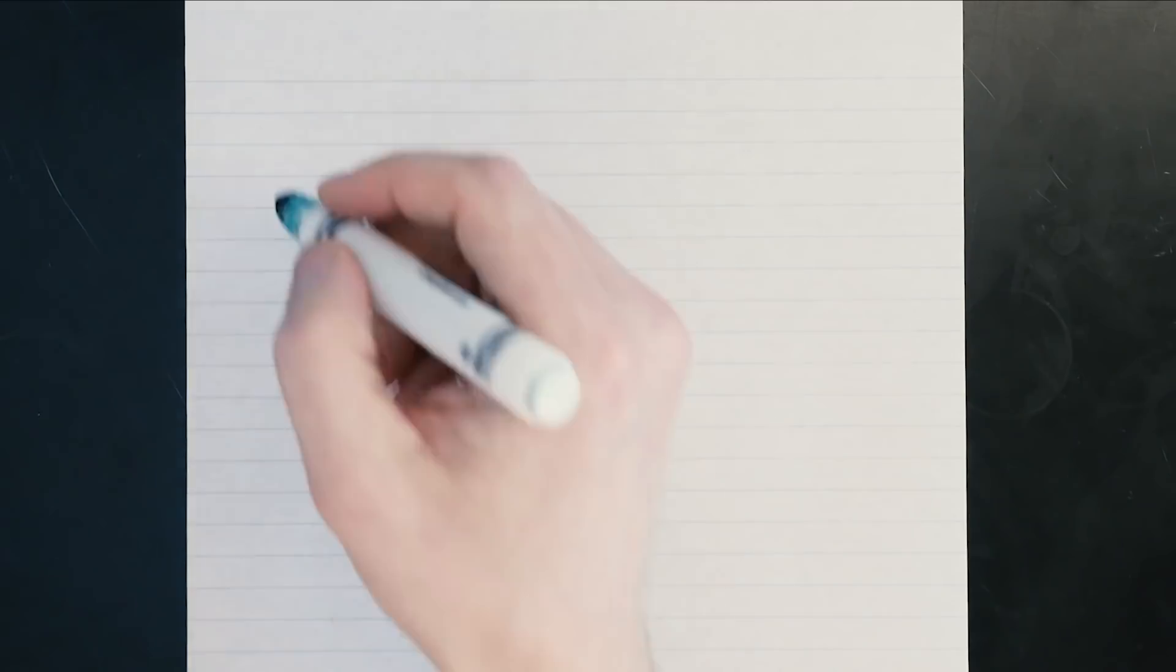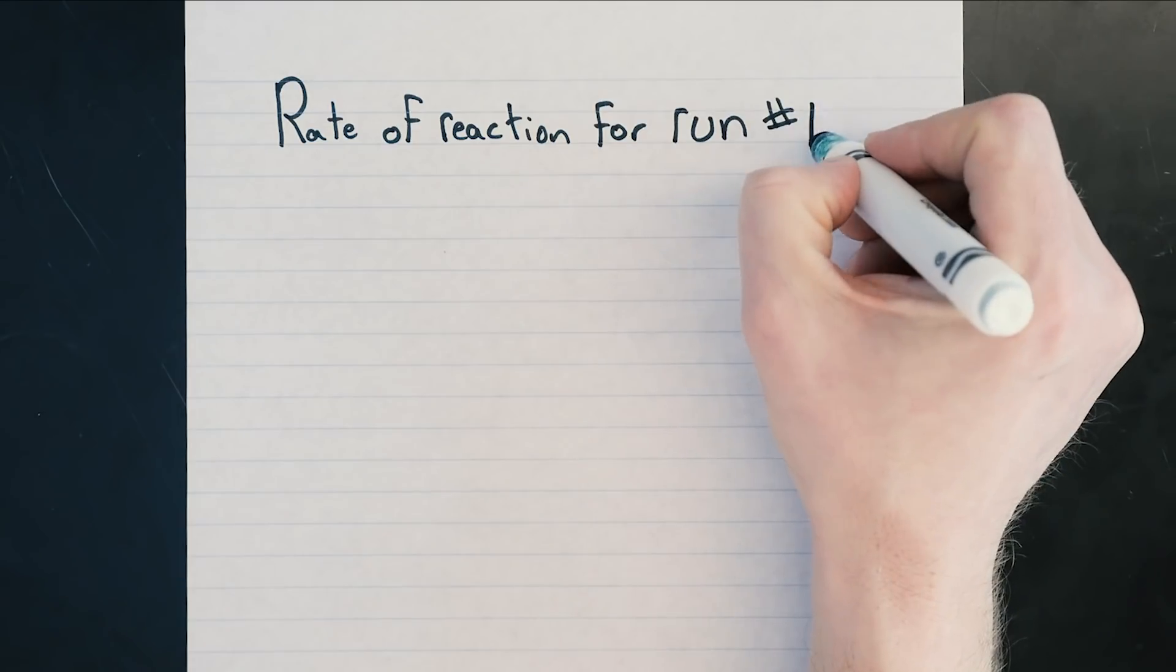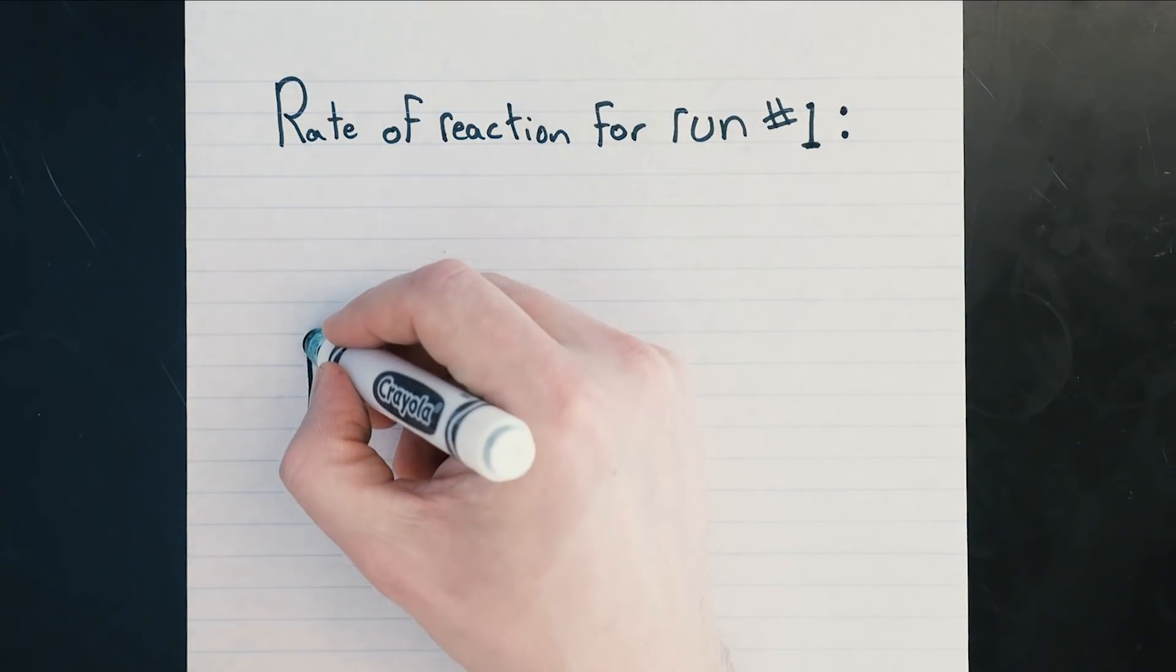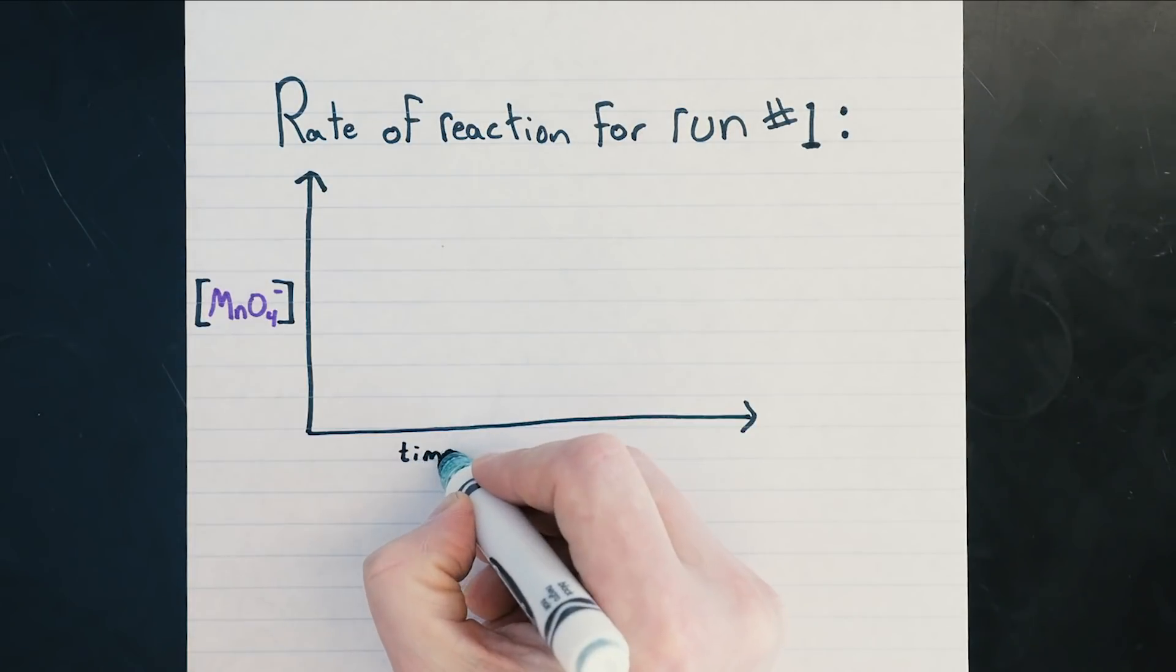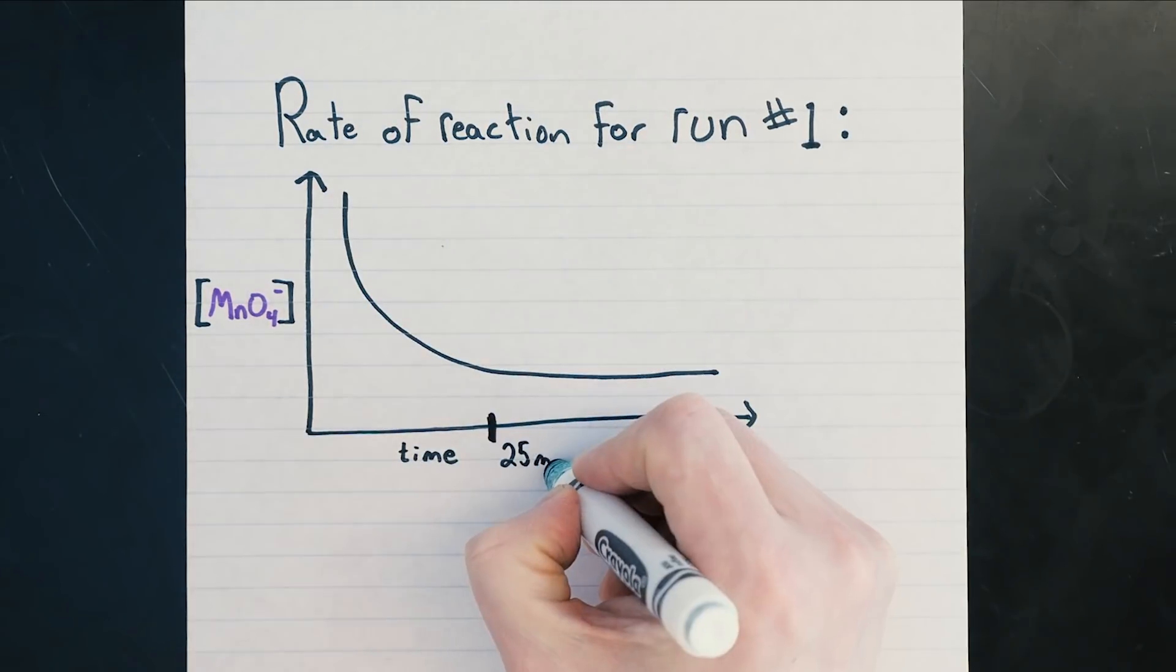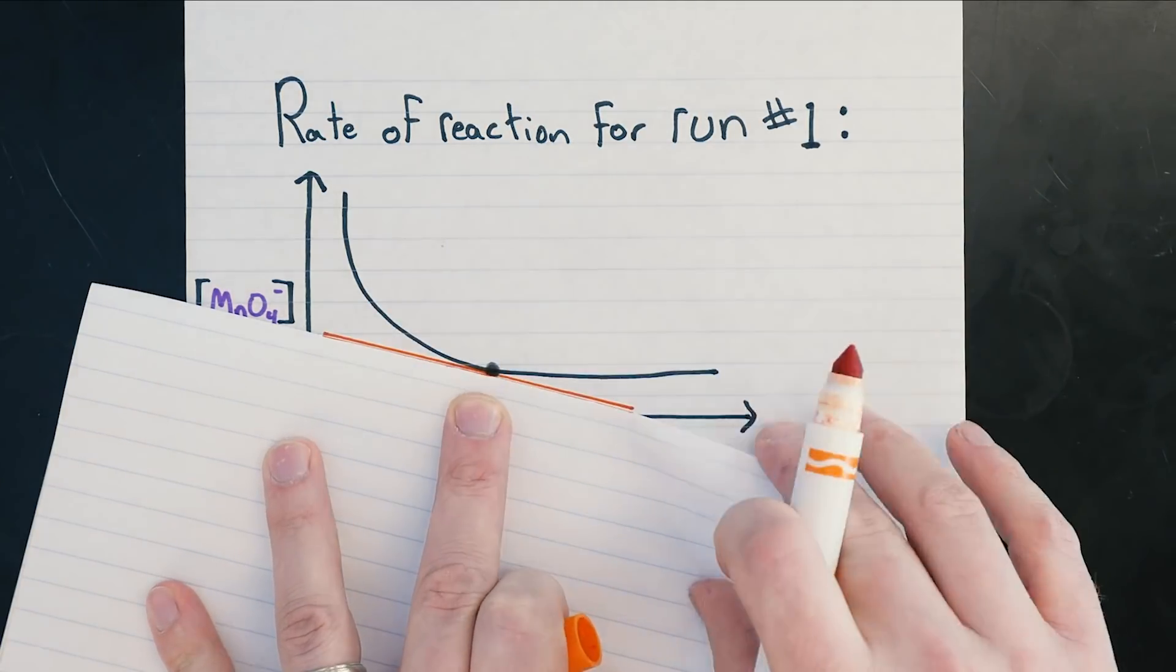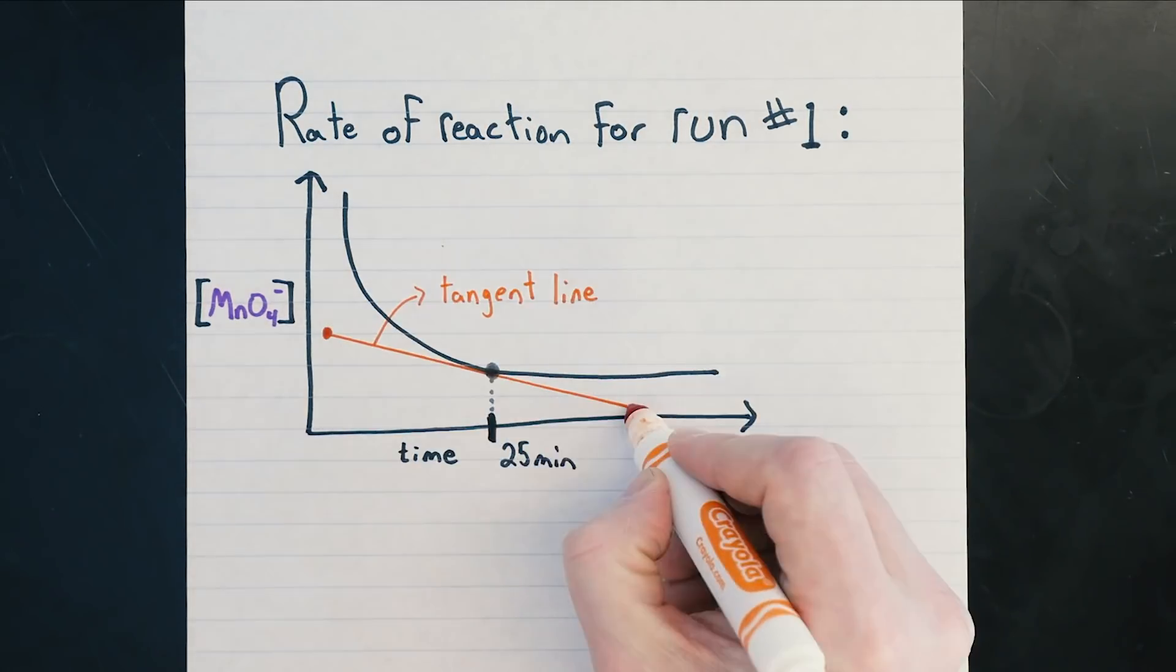The lab manual asks us to determine the rate of reaction for run number 1 specifically at the 25-minute mark. By plotting the concentration of our reactant over time for run number 1, we see that the rate indeed changes. So we find the 25-minute mark, draw a tangent line, and evaluate the slope of this tangent line.